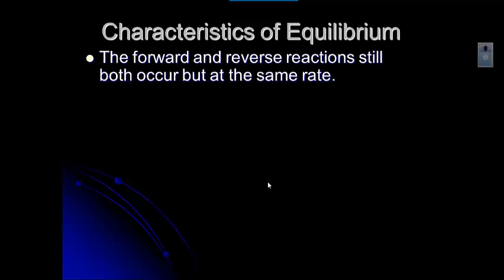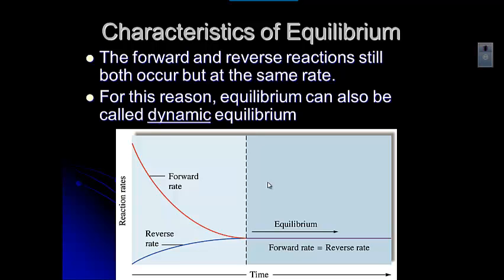The forward and reverse reactions at equilibrium are both occurring, but at the same rate. In the fishbowl demonstration, the cups, even though they were different sizes, held the same amount of water. That was showing our reaction rate. We call this dynamic equilibrium.